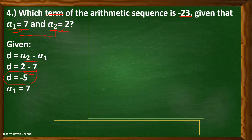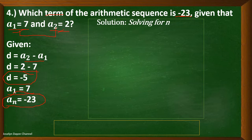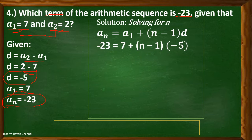We have the first term equal to 7, and a sub n, the last term, equal to negative 23 from the problem. Now we can solve for the value of n. Write the formula: a sub n equals a sub 1 plus the quantity of n minus 1 times d. Substituting: a sub n is negative 23, a sub 1 is 7, and d is negative 5.